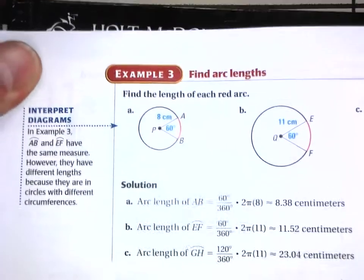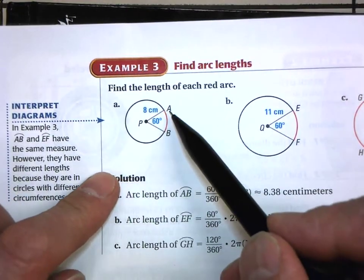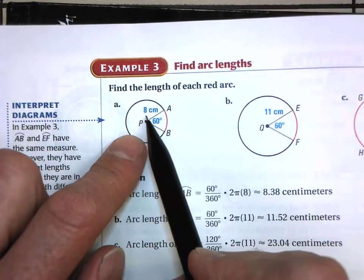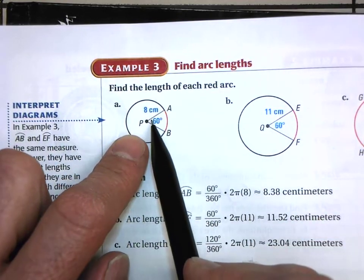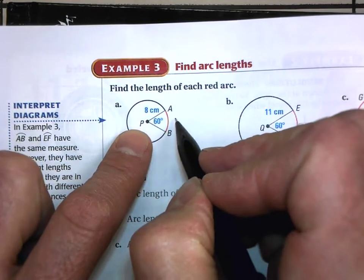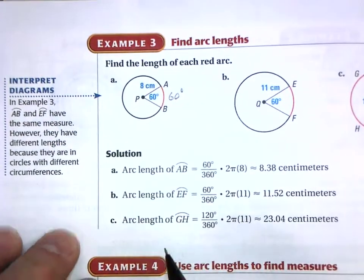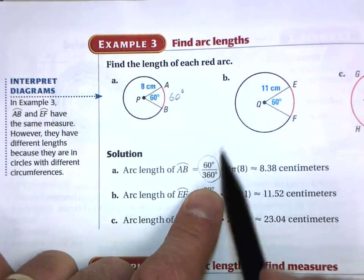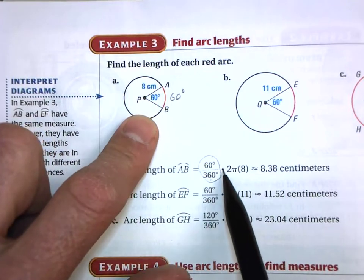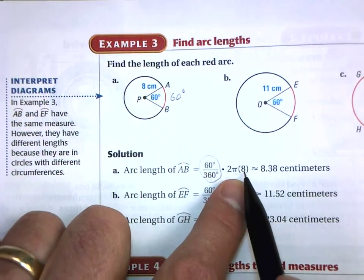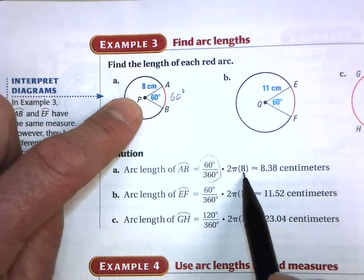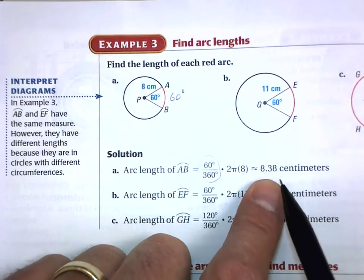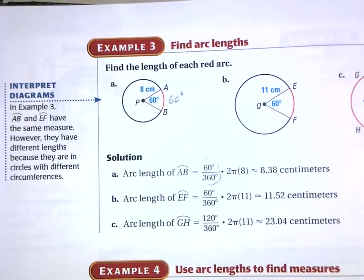Let's do a few problems. Find the arc length of AB when the radius is 6 centimeters and the central angle is 60 degrees — so the arc measure is also 60 degrees. The arc length equals 60/360 times the circumference, which is 2πr. The radius here is 8 centimeters, so when you multiply everything out and round to the nearest hundredth, you get approximately 8.38.